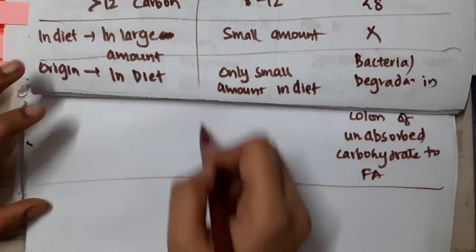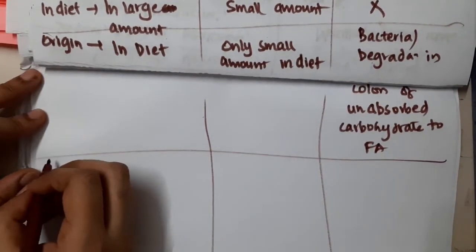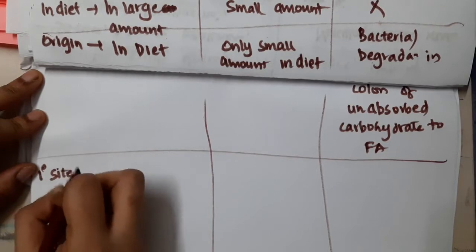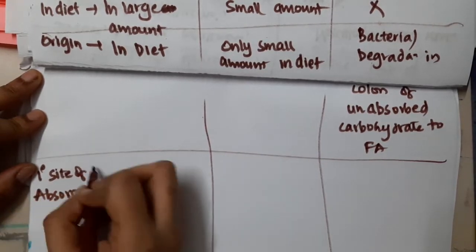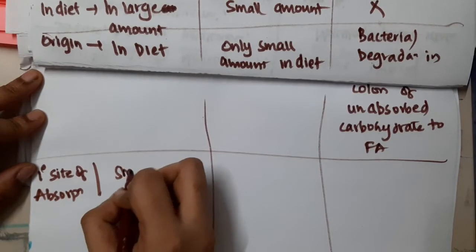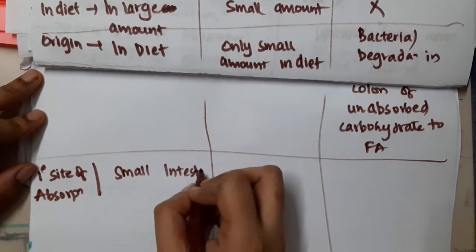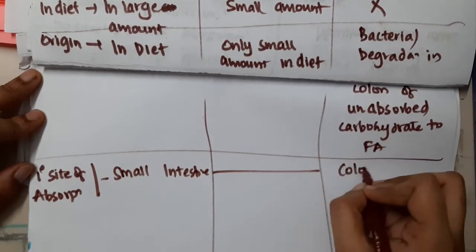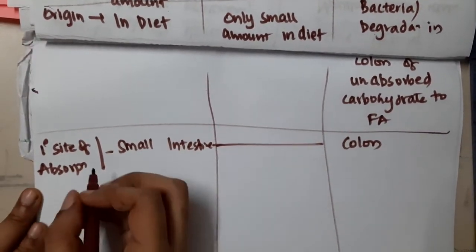The primary site of absorption of long chain fatty acids is the small intestine. Medium chain fatty acids are also absorbed in the small intestine. Whereas the site of absorption of short chain fatty acids is in the colon.